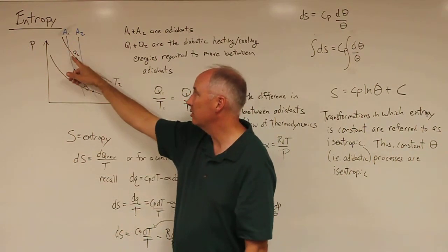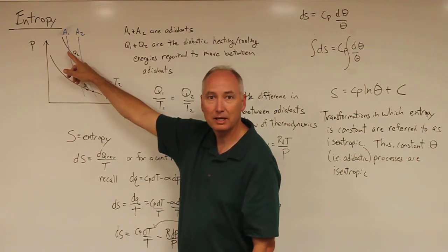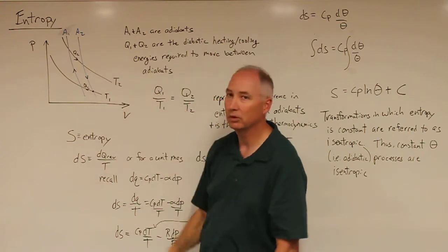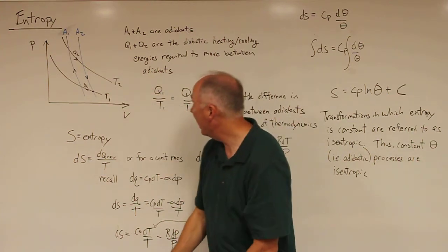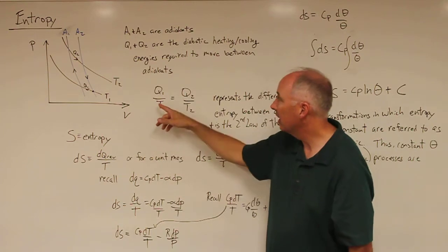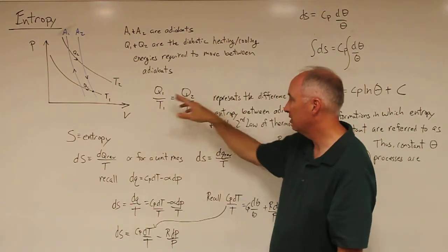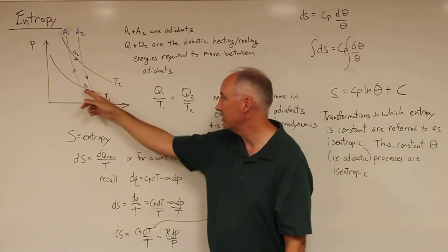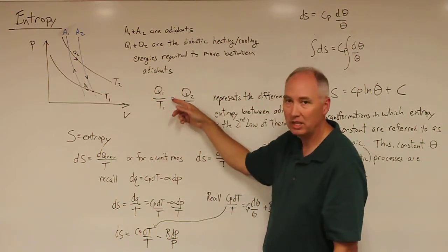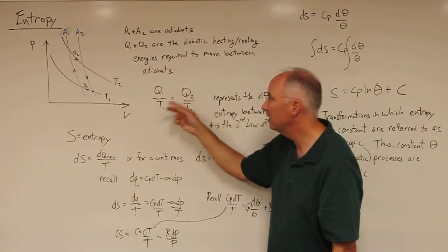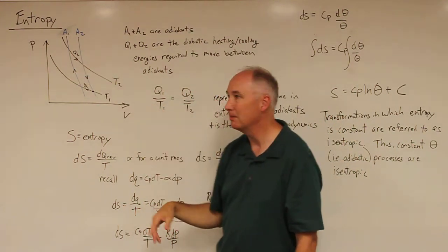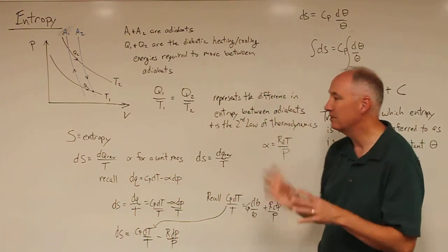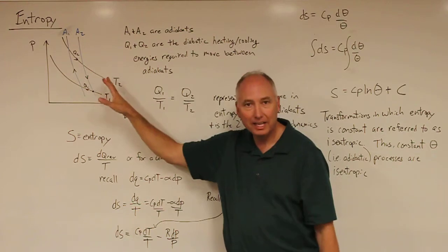If you want to get back to the original adiabat, you need to lose that amount of energy Q2, and then you can move back down the adiabat to your original location. In this particular case, it's been shown that the amount of heat energy required to move between these two adiabats at temperature 1 equals the amount of energy difference at temperature 2. This represents the difference in entropy between the two adiabats.